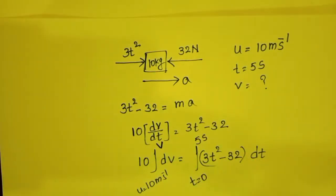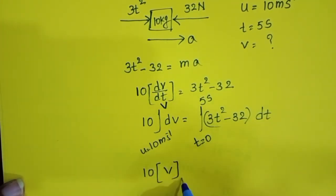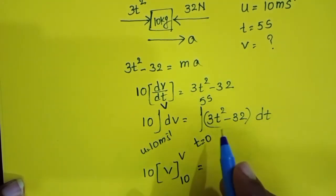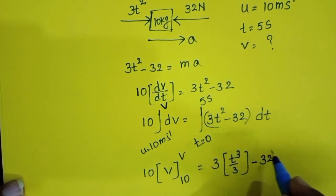10∫dv equals v. The integral of t² is t³/3 minus 32t.